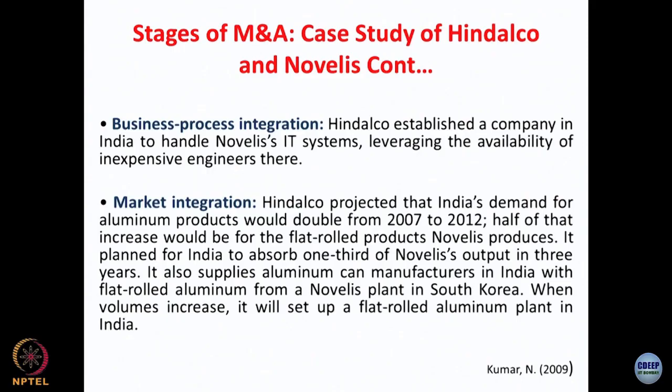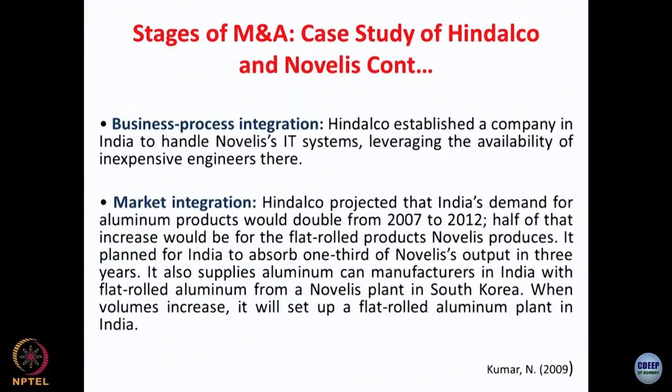Then comes the stage of market integration. Hindalco projected that India's demand for aluminum products would double from 2007 to 2012, and it almost happened. Half of the increase would be for the flat-rolled products Novelis produces. It planned for India to absorb one third of Novelis's output in three years, and also supplied aluminum can manufacturers in India with flat-rolled aluminum from Novelis's plant in South Korea.